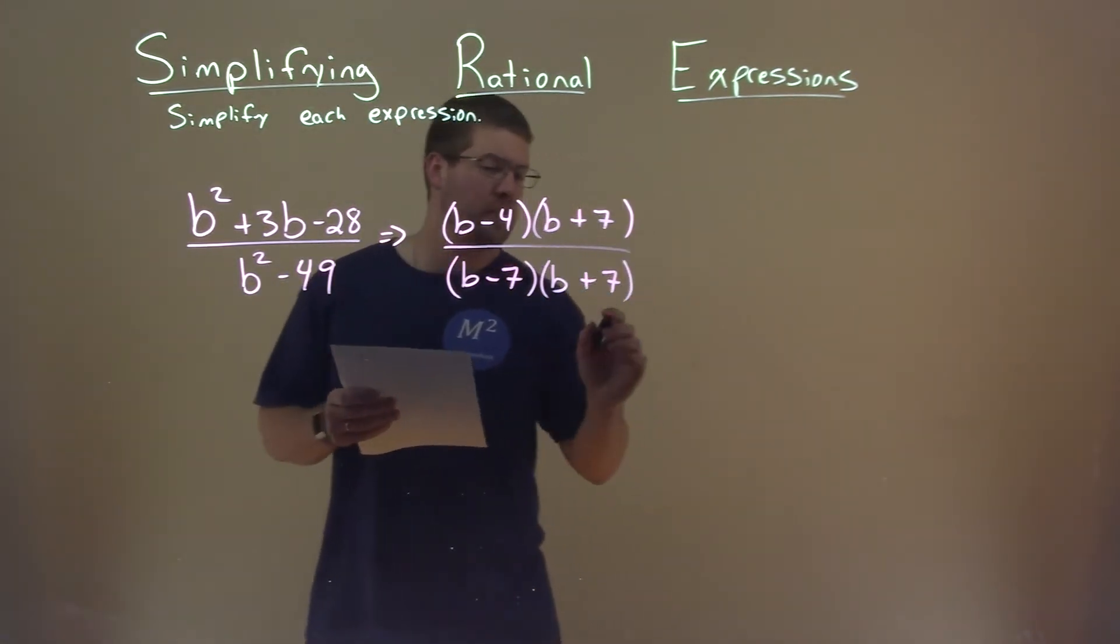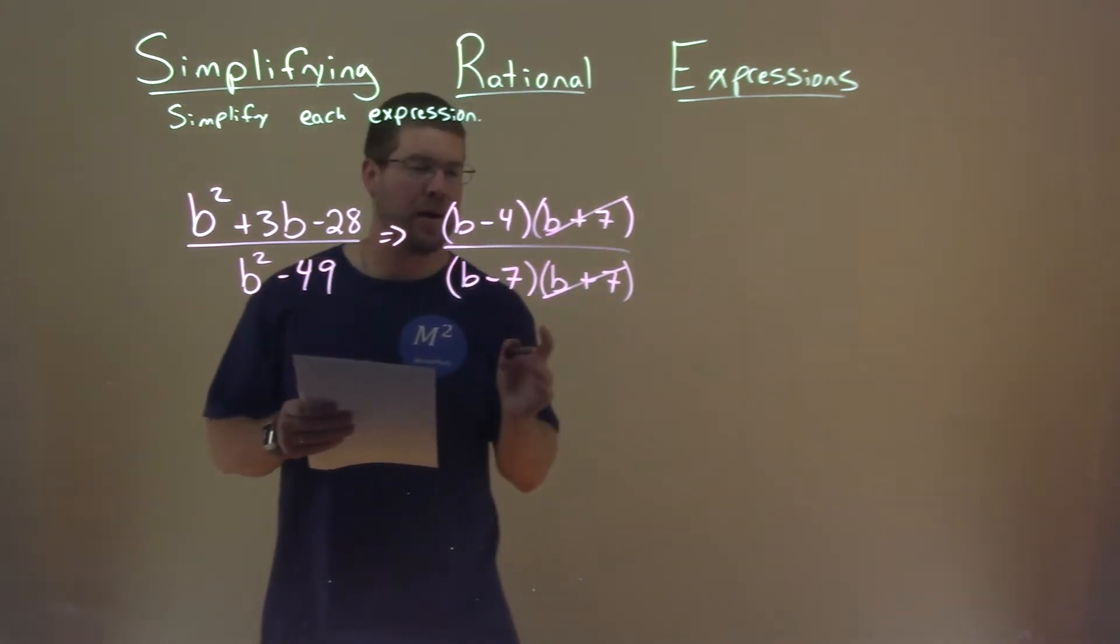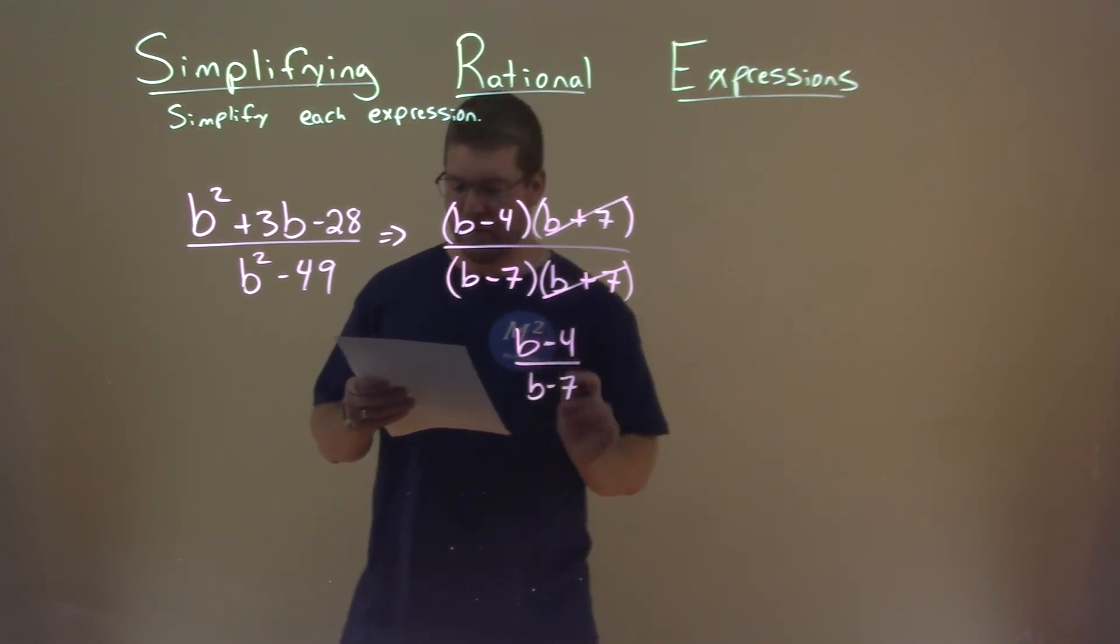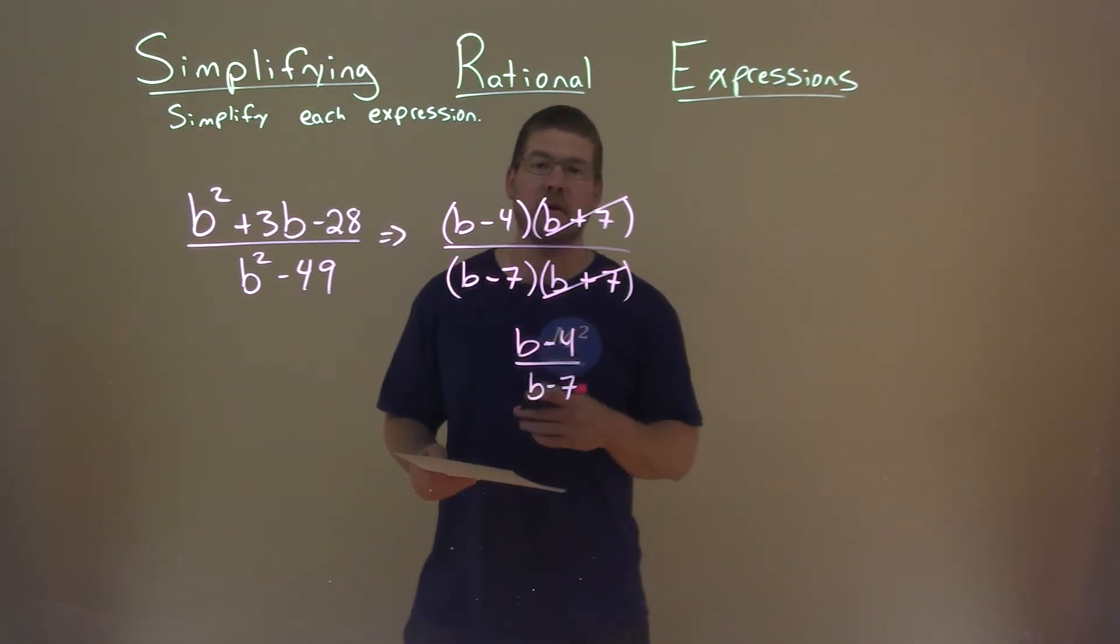Hopefully now you can see that b plus 7 here can cancel each other out, leaving us with b minus 4 in the numerator and b minus 7 in the denominator. And that is our final answer.